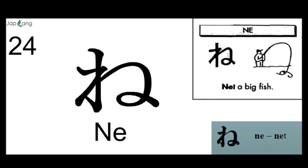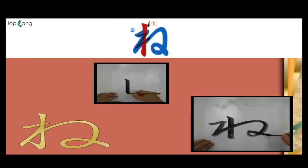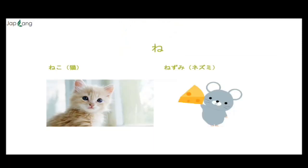Next is NE. NE, NETA — big fish. NE as in NET. This is how we write NE — we have two stroke orders. NE as in Neko — Neko means cat — and Nezumi means mouse.